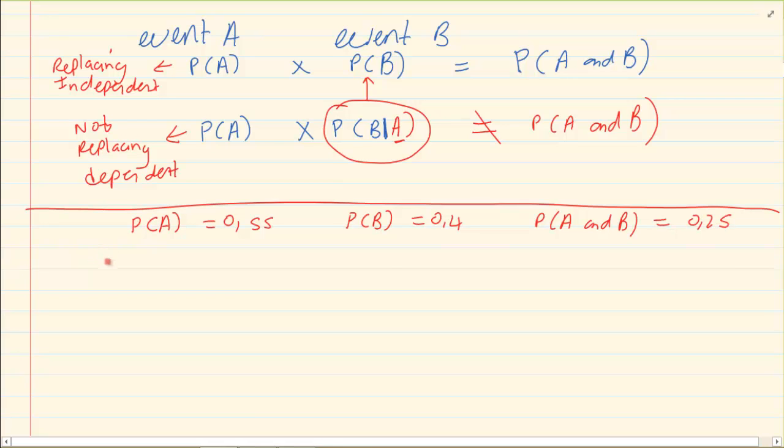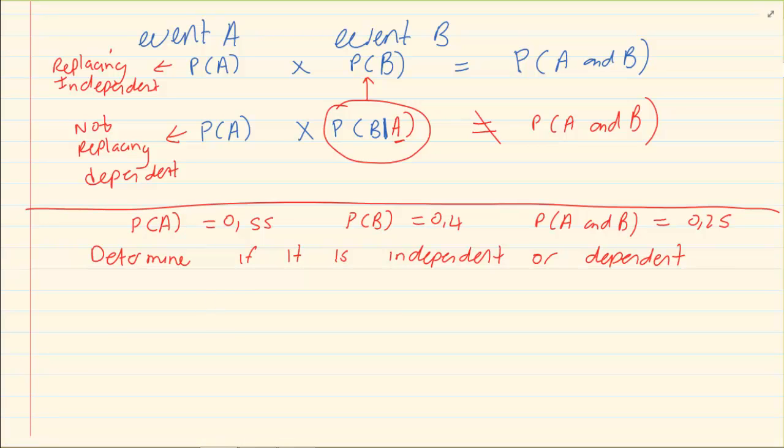So can you see, they didn't give us a tree diagram. They didn't even tell us what event they're doing. But what you do is you say okay, we know an event is going to be P of A times P of B, which gives me an answer.